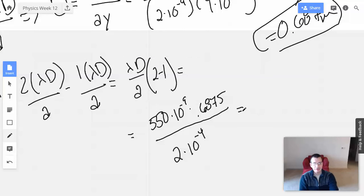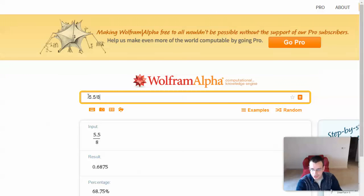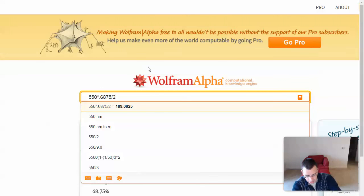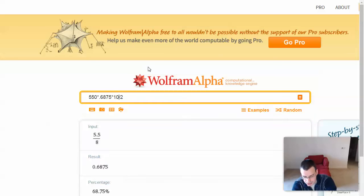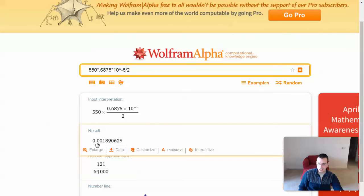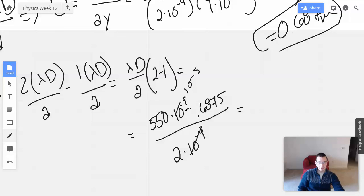I'm just going to ask Wolfram to do this one for me. So 550 times 0.6875 divided by 2, and I'll multiply the top by times 10 to the negative 5th. There we go. I'll just see if Wolfram did what I want. Wolfram says 1.9 times 10 to the negative 3rd, equals 1.9 times 10 to the negative 3rd.